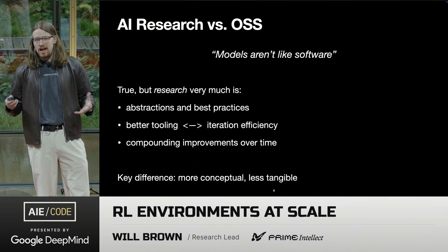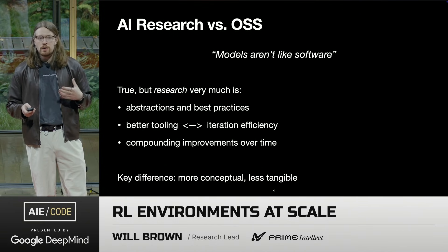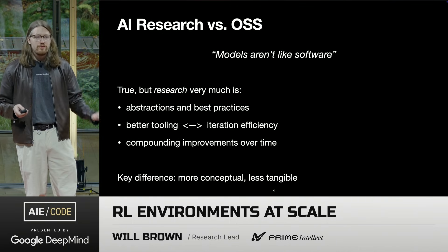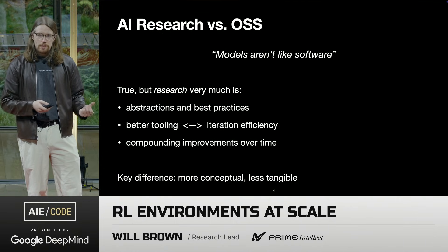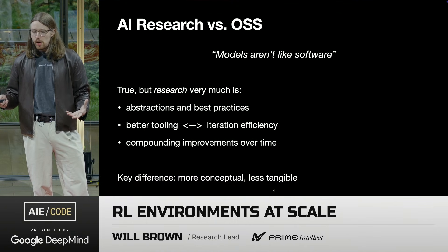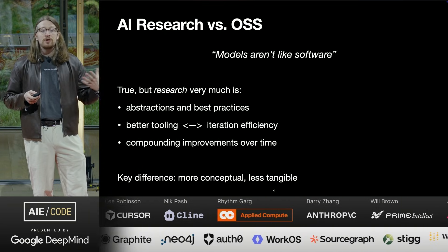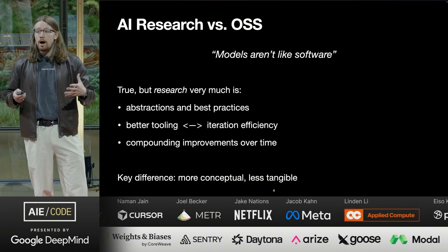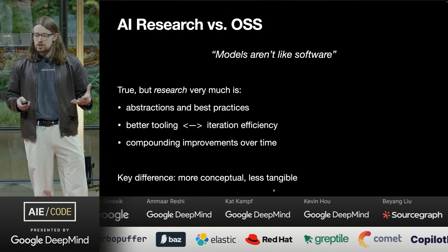People are kind of iffy about whether open source models are going to work, but in my mind that's not quite the right analogy. When comparing AI to traditional software, there are great examples of open source ecosystems like Linux, Node, and Apache. But the analogy in AI is not models as fixed checkpoints — it's about research as a practice and a set of ideas. There are a lot of parallels in terms of growing a research ecosystem versus a software ecosystem, where you want to compound abstractions, best practices, better tooling, and iteration efficiency to allow more advanced, complex things to be built by decreasing barriers to entry.